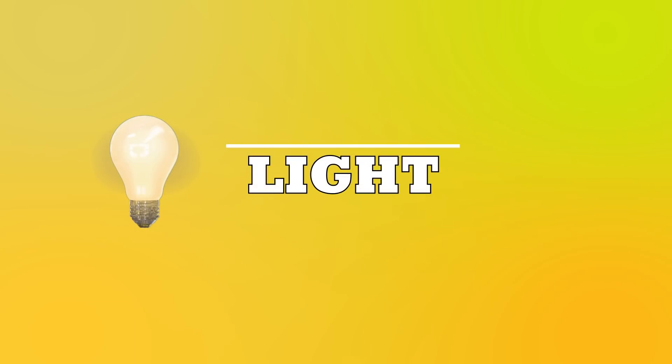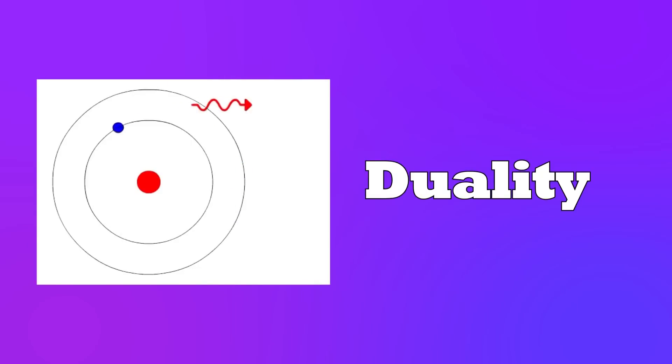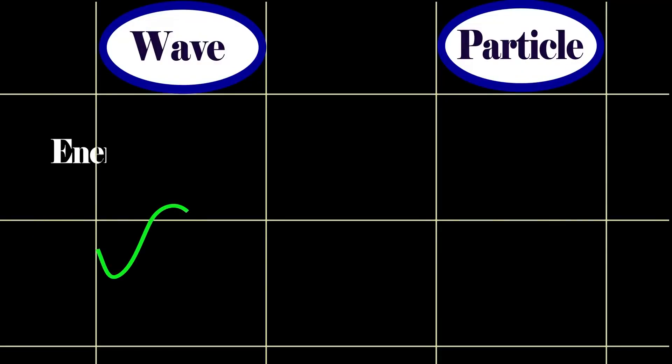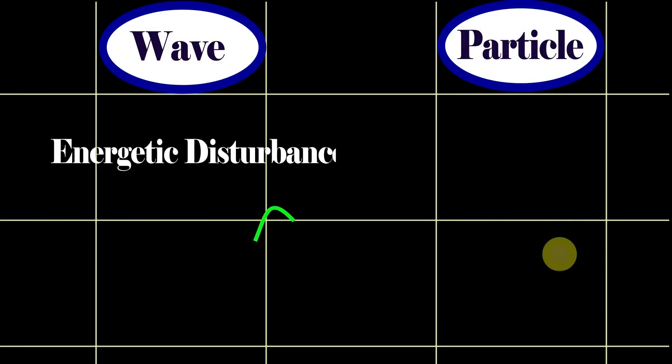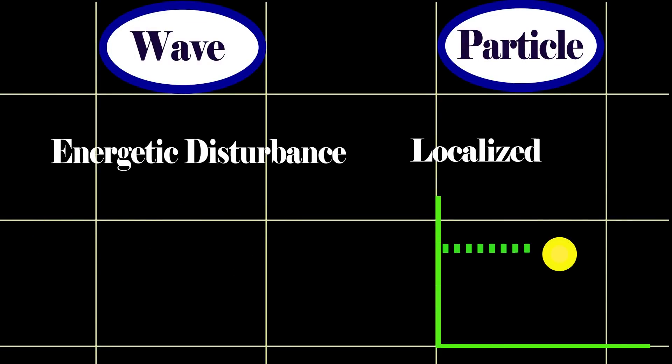In a similar way, light exhibits a wave-particle duality. Waves and particles — what are they? Well, a wave is an energetic disturbance, whereas a particle is a localized object.